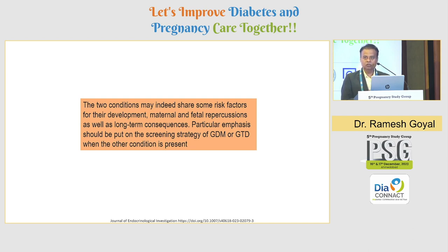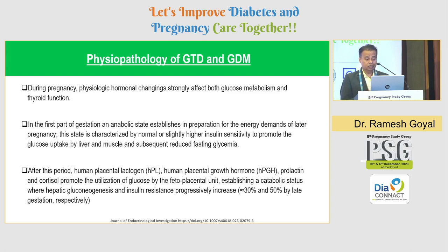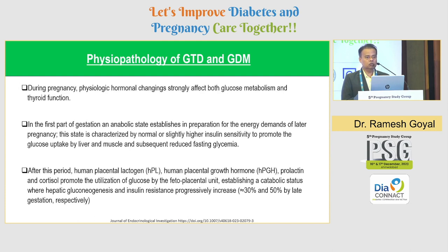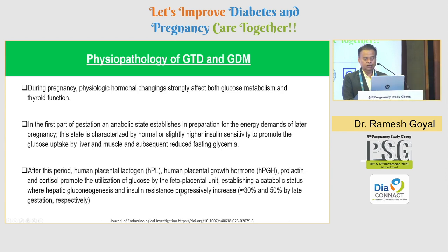There is an interrelationship between GDM and gestational thyroid diseases that may affect maternal and fetal outcomes. The first part of gestation is an anabolic state which establishes the maternal body to prepare for energy demands of later pregnancy, characterized by normal or slightly higher insulin sensitivity to promote glucose uptake by liver and muscle and subsequent reduced fasting glycemia. If a well-controlled diabetic lady experiences hypoglycemic attacks, one possibility can be early pregnancy. After this, human placental lactogen, human placental growth hormone, prolactin, and cortisol take over, increasing insulin resistance in the maternal body, which progressively increases by 30 to 50 percent in late pregnancy.